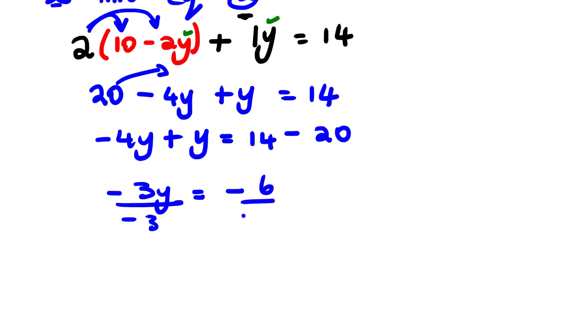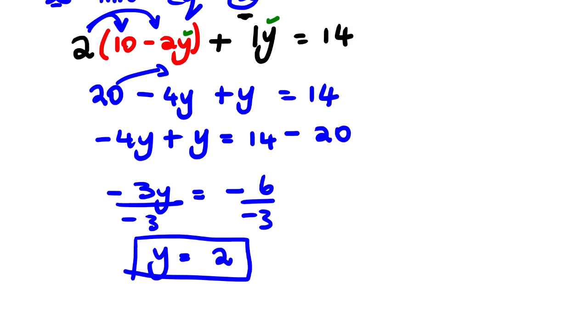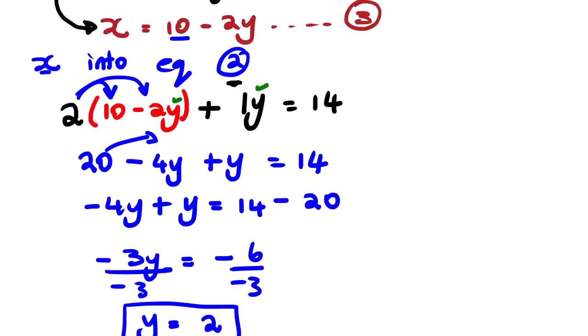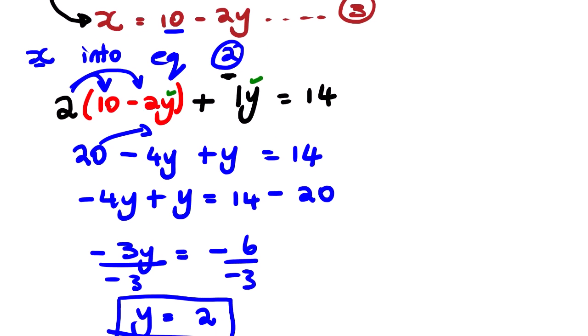Combining like terms gives negative 3y equals negative 6. Dividing both sides by negative 3, we get y equals positive 2. Now remember we are solving simultaneously, so we need to go back to our equations. Since y equals 2, we can substitute into equation number three, since the subject of the formula is already x there.